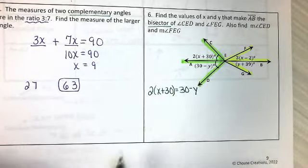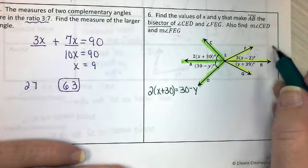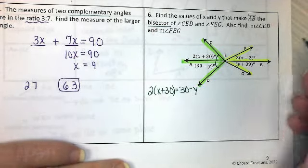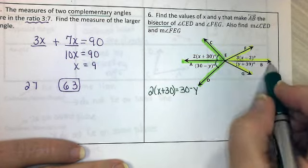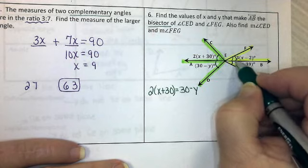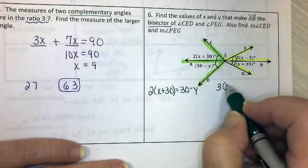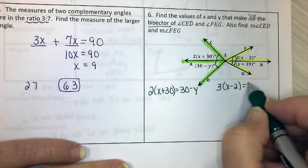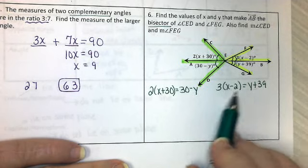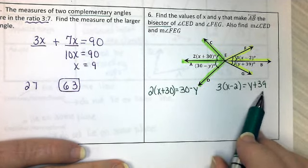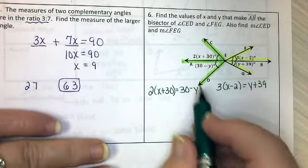So I'm going to write 2x plus 30 equals 30 minus y. Notice this equation has an x and a y. So I can't solve it with just this equation. I'm going to have to find another equation to use. And then it's going to be a system that I'll solve. For angle FEG, if this is a bisector, these two angles are equal to each other. So I get 3x minus 2 equals y plus 39. Another equation with an x and a y. So I'm going to get these ready to write a system of equations and solve.